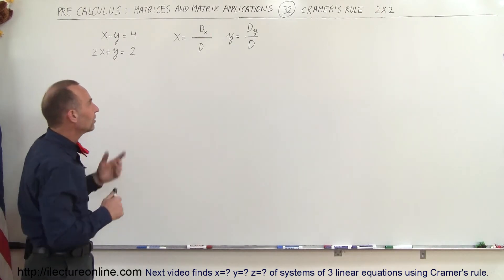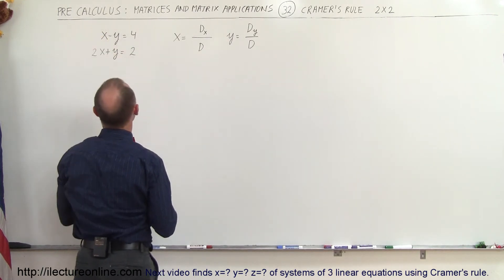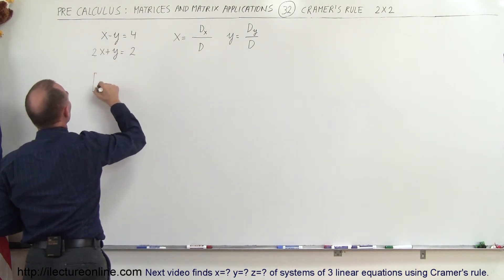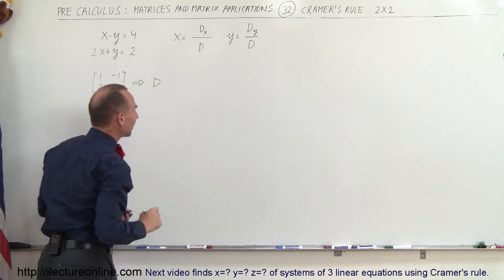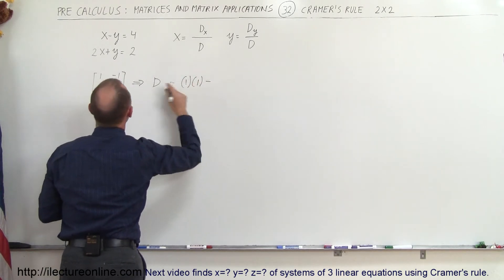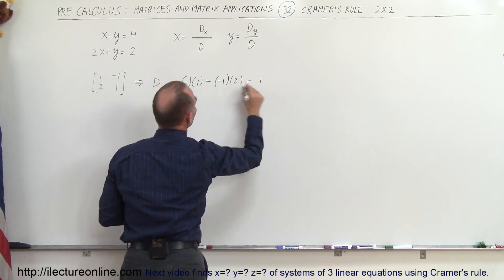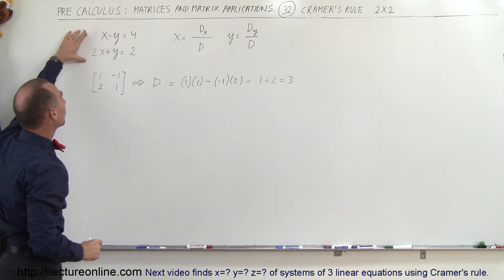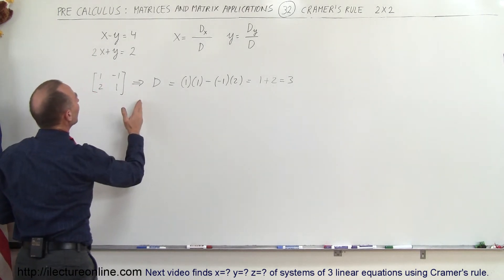What is D, D sub x, and D sub y? D is the determinant of the matrix of the coefficients of the variables in the equations. We take the matrix using the coefficients of the variables — that would be 1, -1, 2, and 1 — and find its determinant. That is 1 times 1 minus (-1 times 2), which is 1 plus 2, equal to 3.